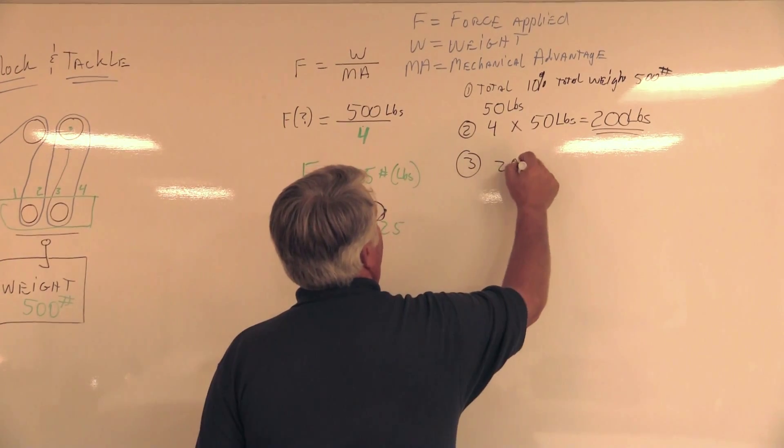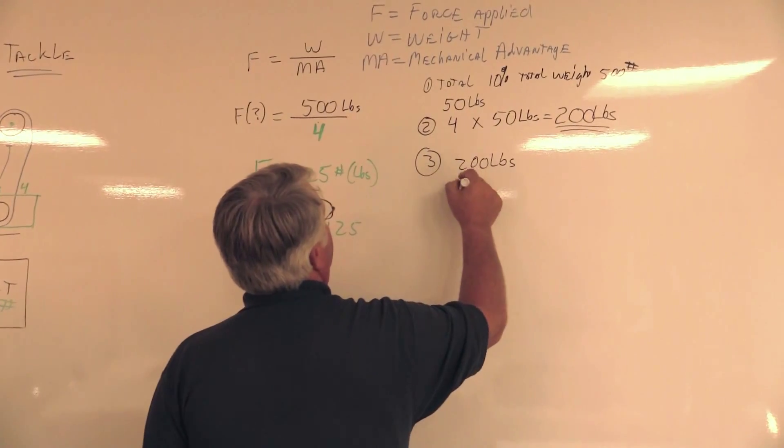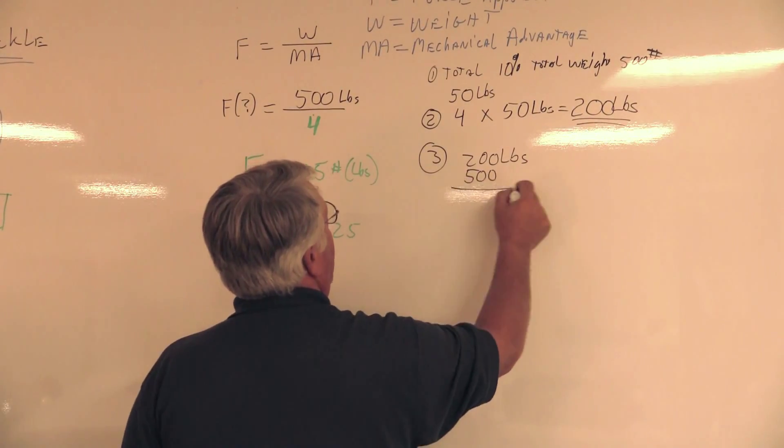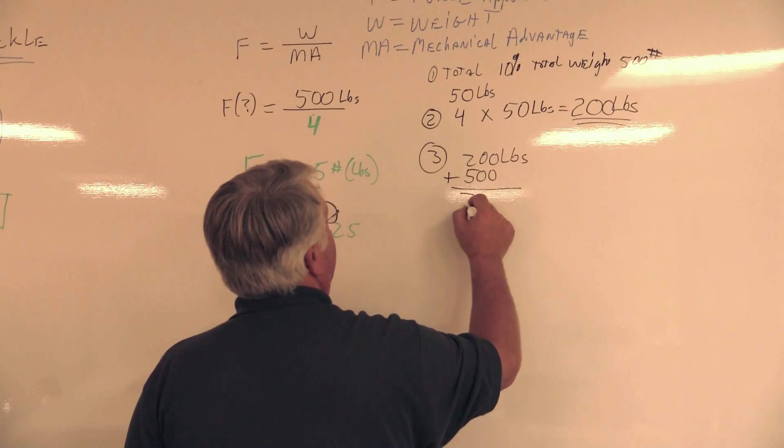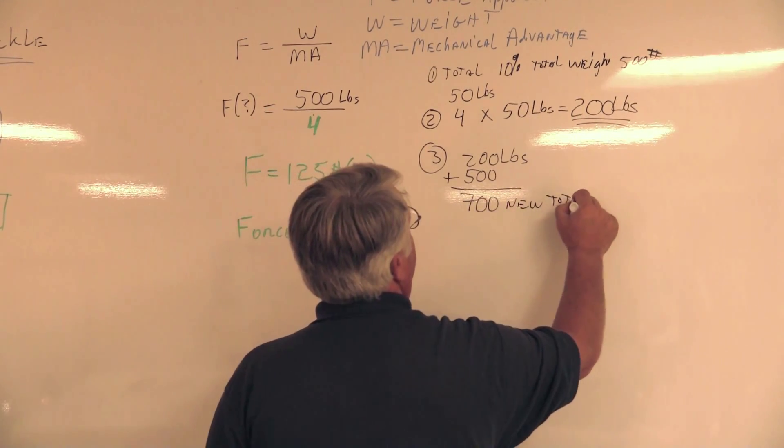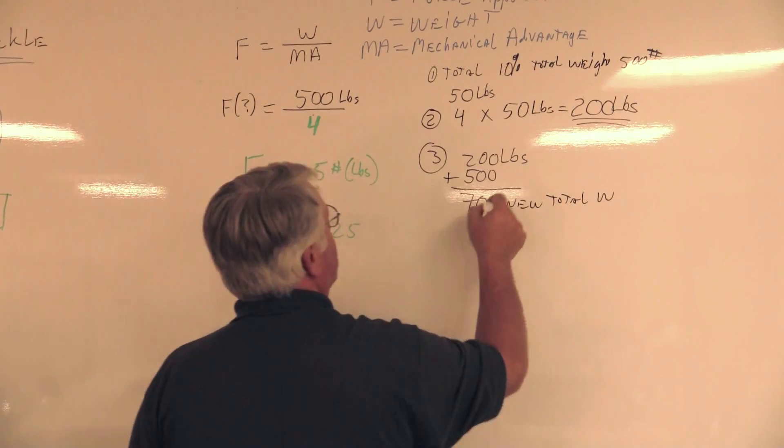So now I have a number that I can take and put into my formula. The next step is I've got to take the 200 pounds, and I'm going to apply it to the total weight I already have. See my 500 pounds?